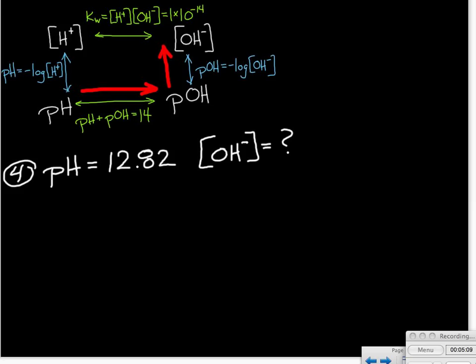And again, I'm going to take on the route of first finding the pOH, and then working backwards to find the concentration of the hydroxide ion. So again, our pOH is just going to be 14 minus the pH, which will give us a pOH of 1.18.